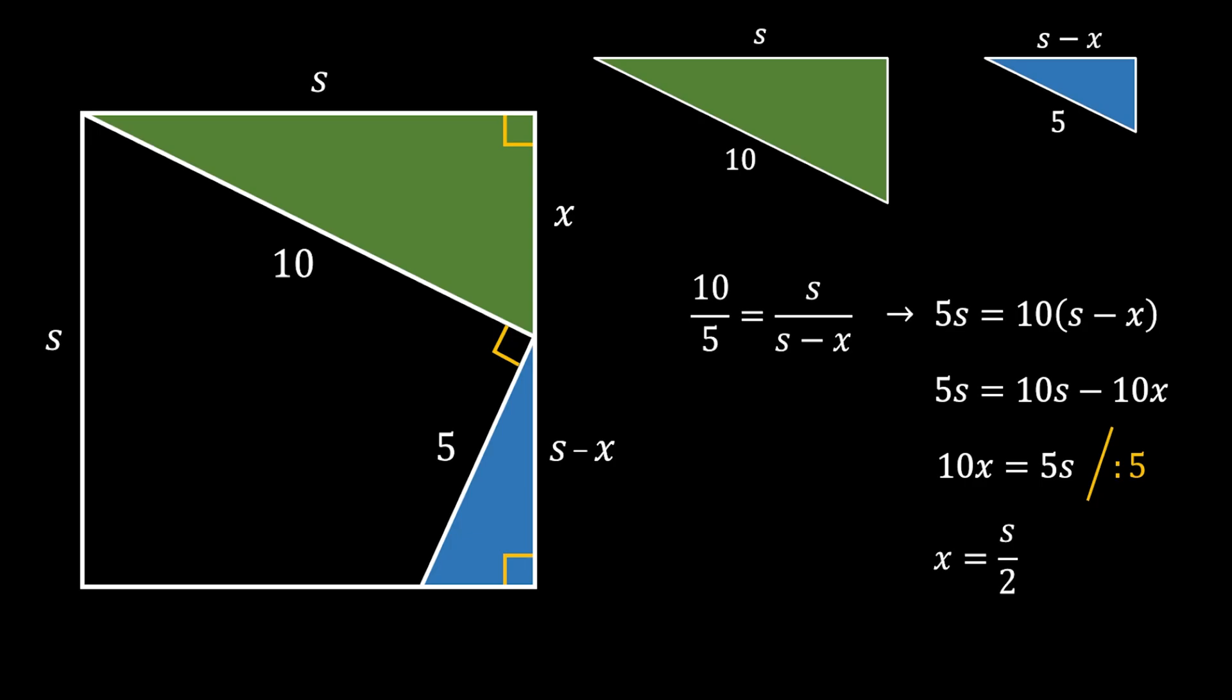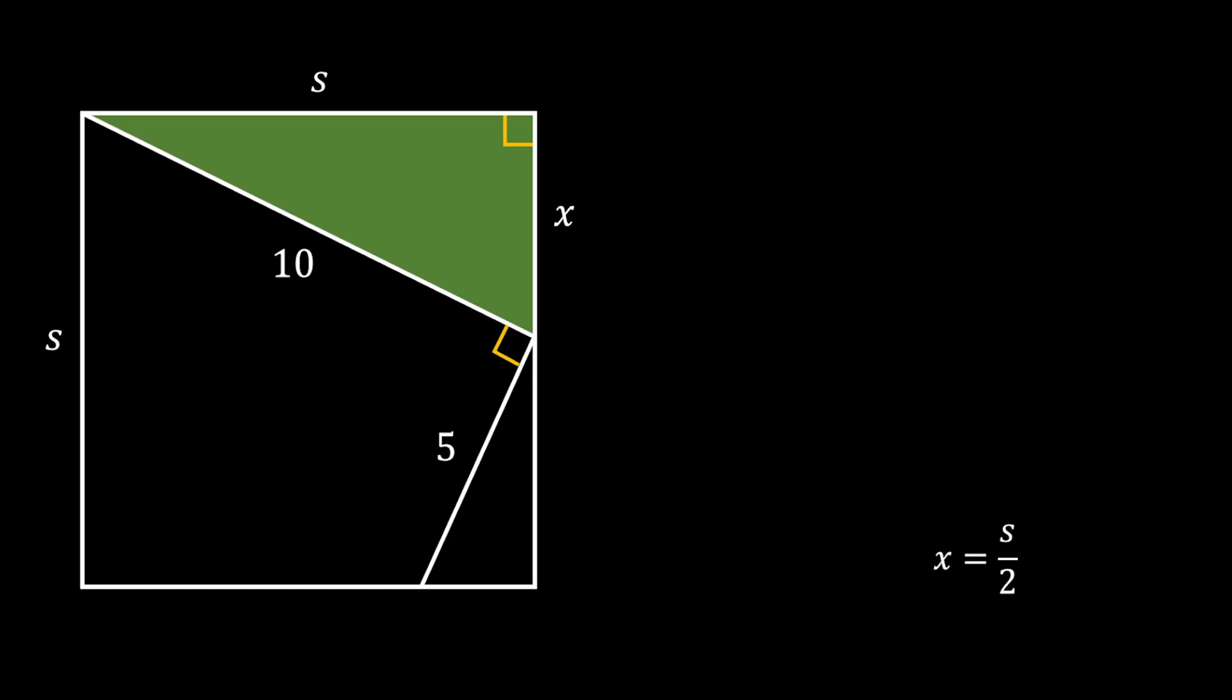Great, so now let's set our attention to the green right triangle. And let's substitute the value of X for S over 2. Now we will use the Pythagorean theorem on this triangle. We can say that the leg S over 2 squared plus the leg S squared must be equal to the hypotenuse 10 squared.